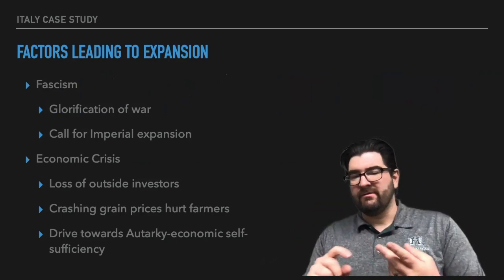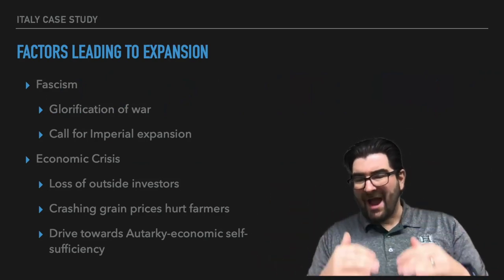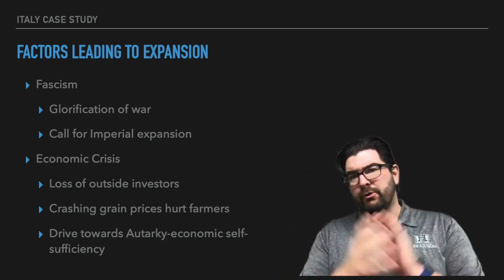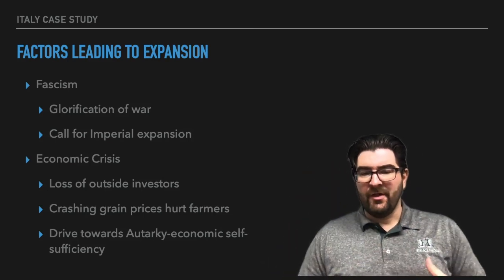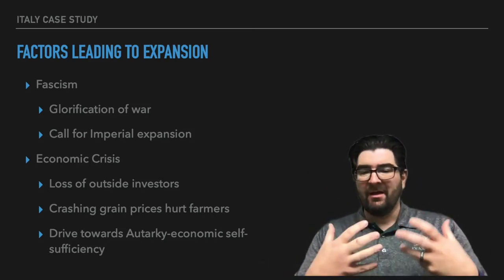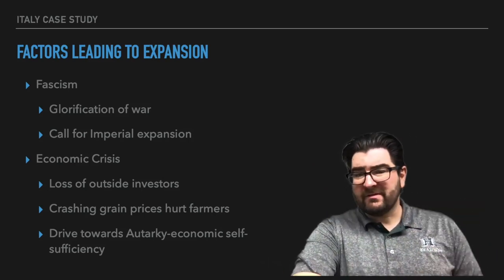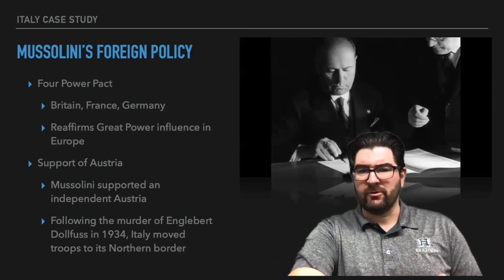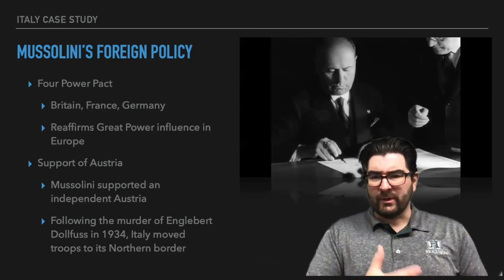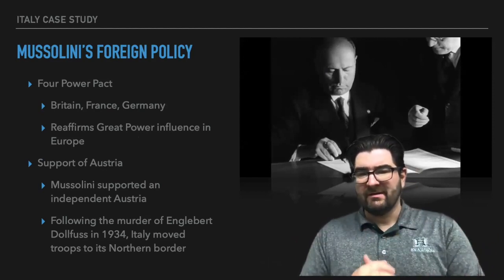Italy is losing outside investors, grain prices in Italy are crashing, it's hurting Italian farmers, unemployment is on the rise, which is going to push Italy and Benito Mussolini towards creating this autarchic economic society where they can be self-sufficient economically. And you can only do this by expanding your territory. And so Benito Mussolini's foreign policy as we go through the 1930s is going to start to take on a more aggressive tact.